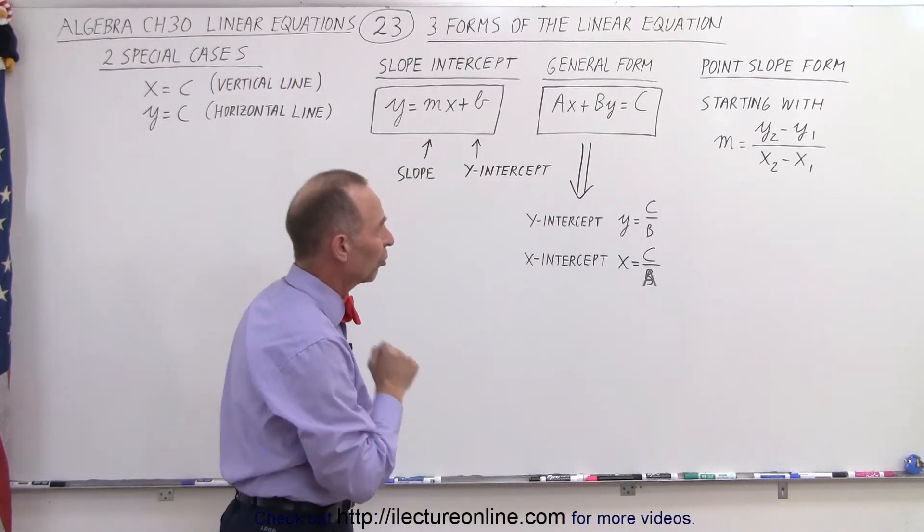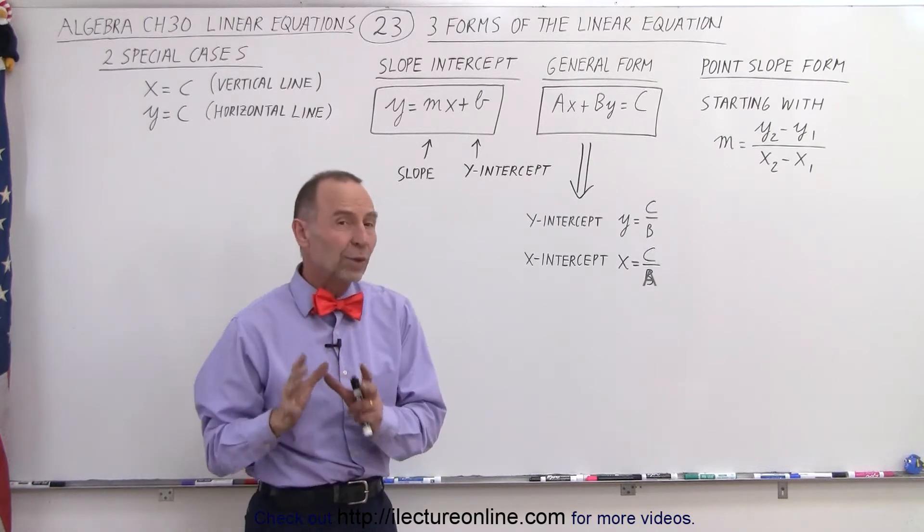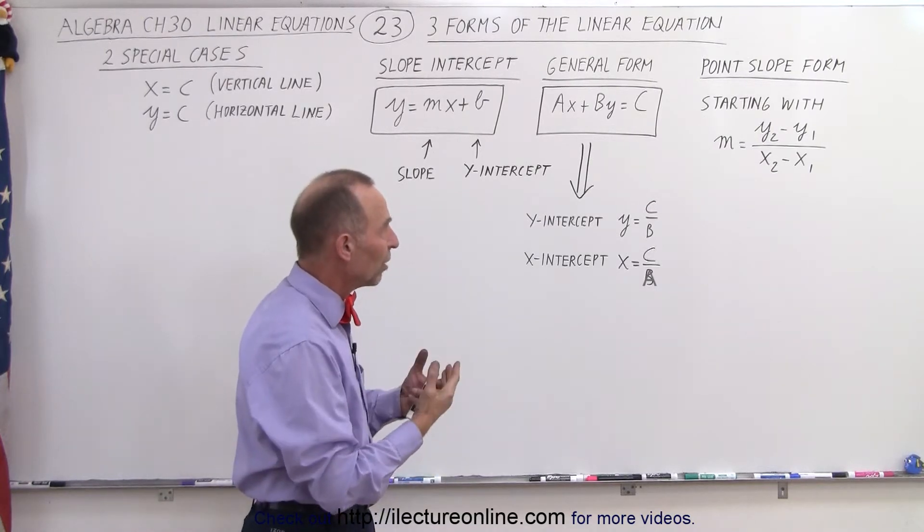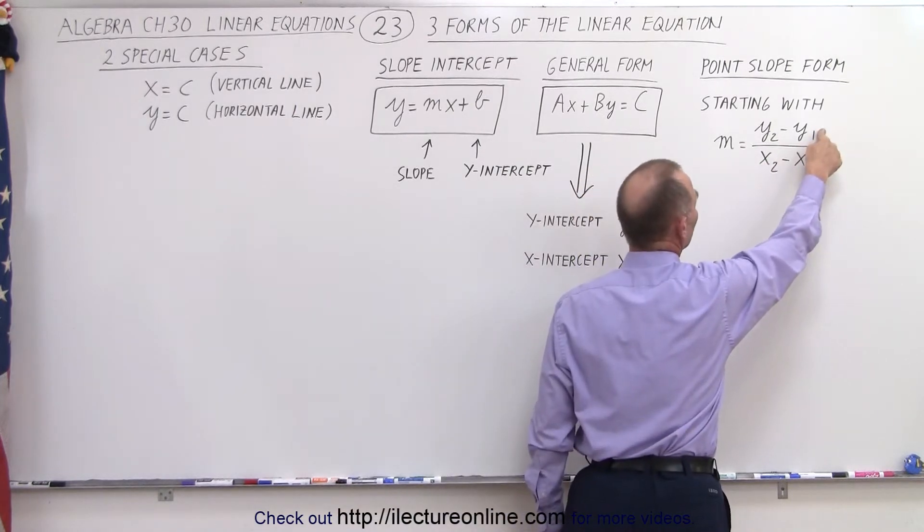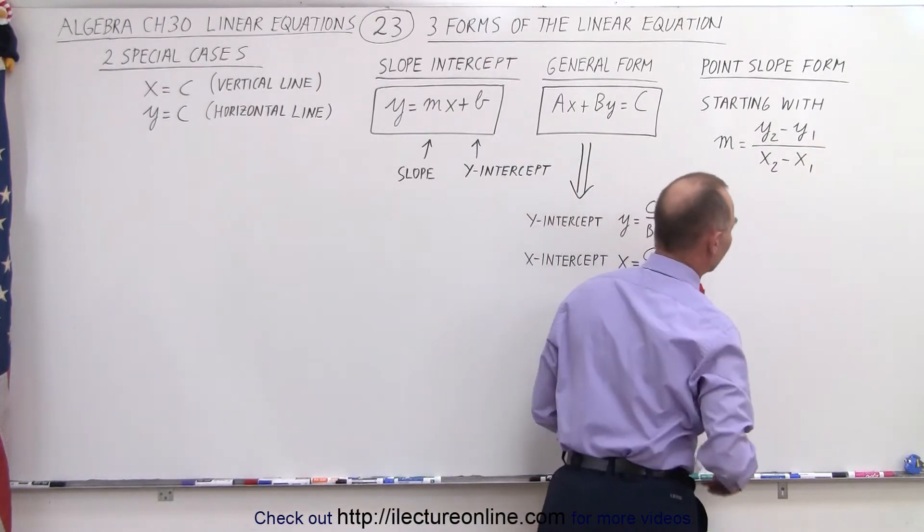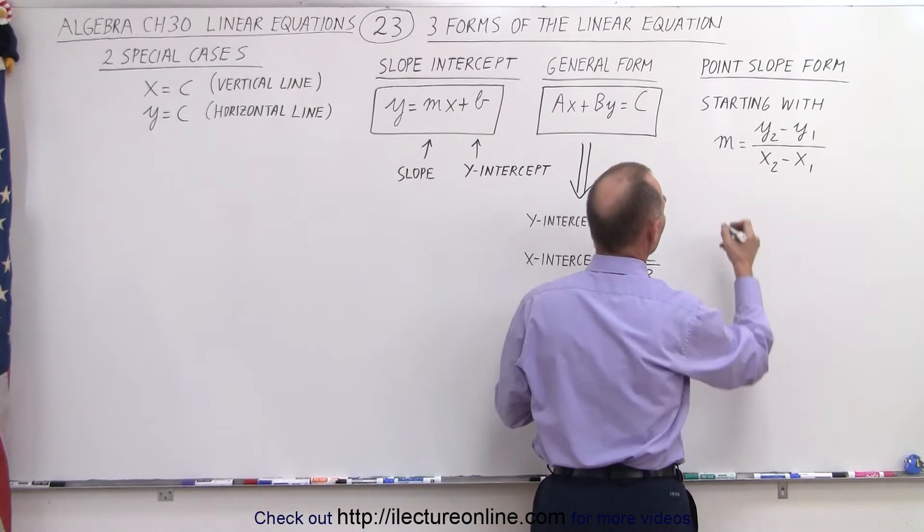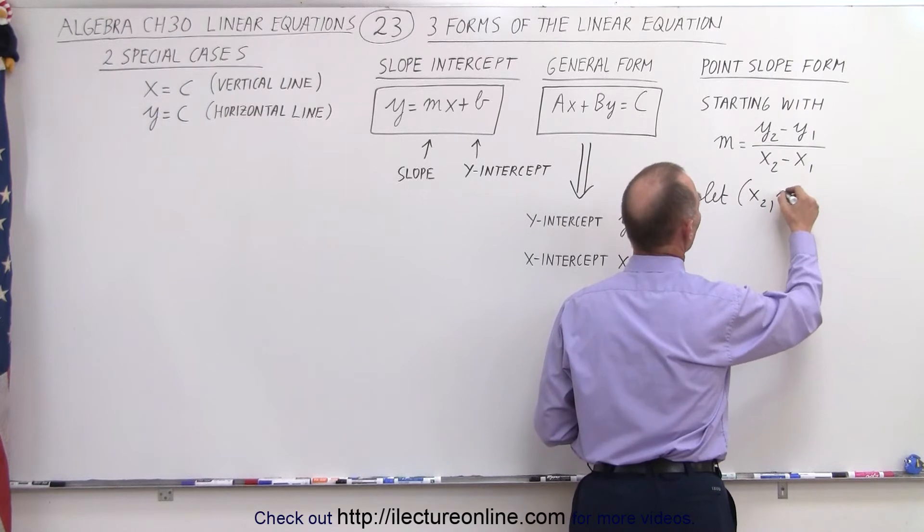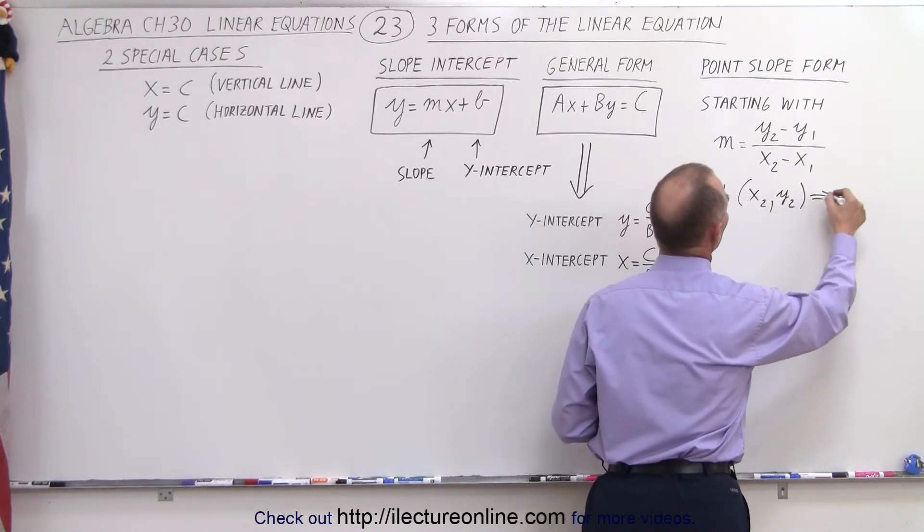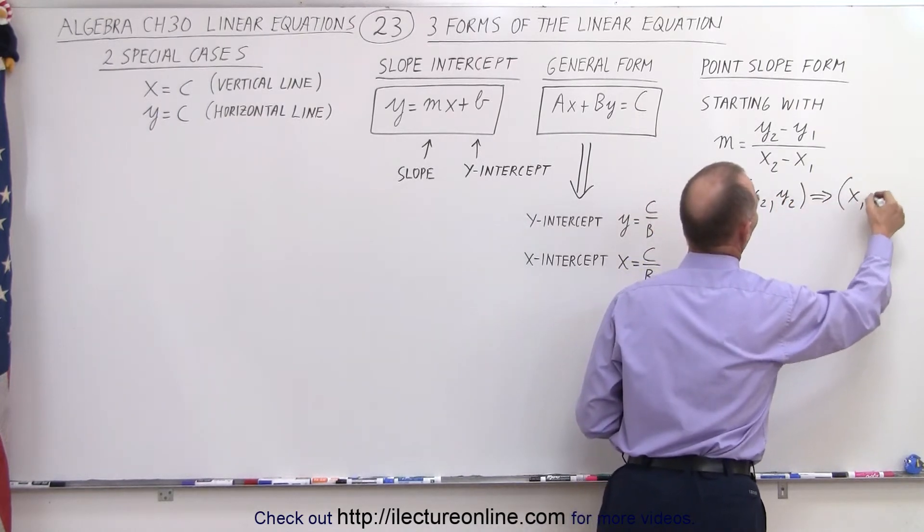But what about the point-slope form? Well, if we start with the formula or the equation of the slope, where m is the difference between the y values of two points divided by the x values of two points, and then we let one of the two points, for example, let the point x2 comma y2 become just a general point x, y.